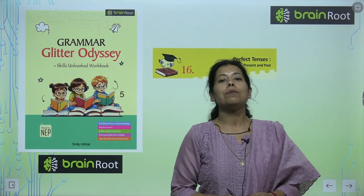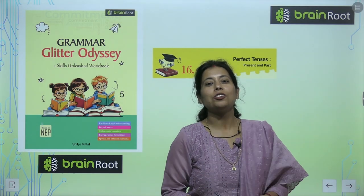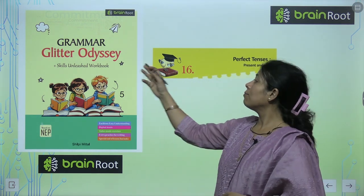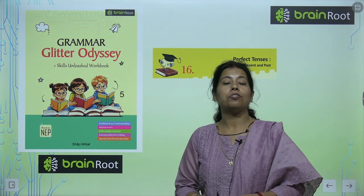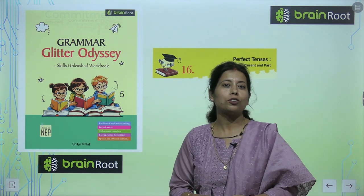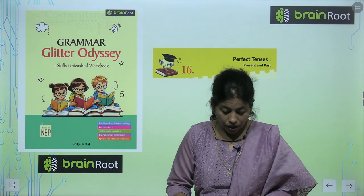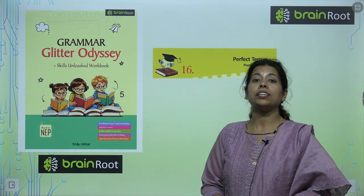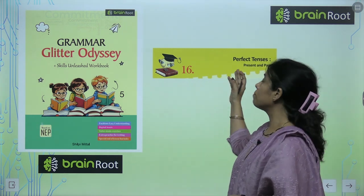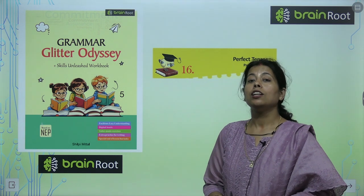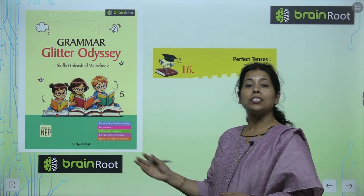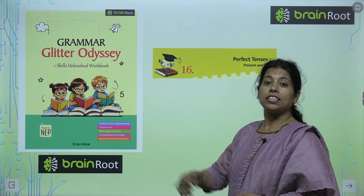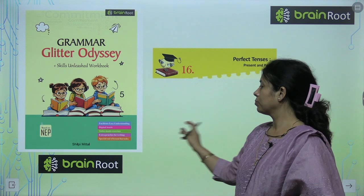Hello young chums, I am your English trainer Pooja. Today we will start our chapter number 16 of book Kramer Glitter Odyssey of grade 5 by Brain Root. It's a product of Amit Publishing House. The name of the chapter is Perfect Tenses: Past and Present. Let's start.